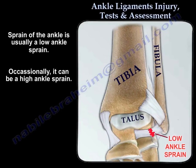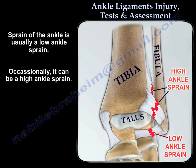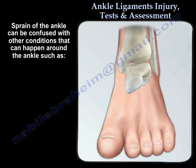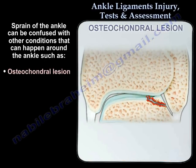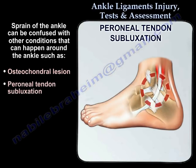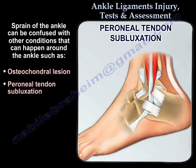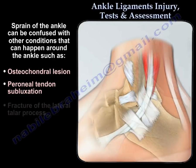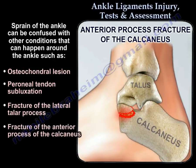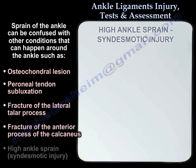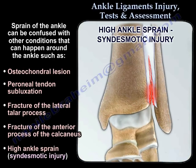A sprain of the ankle is usually a low ankle sprain, but occasionally it can be a high ankle sprain. Sprain of the ankle can be confused with other conditions that can happen around the ankle, such as an osteochondral lesion, peroneal tendon subluxation, fracture of the lateral talar process, fracture of the anterior process of the calcaneus, or a high ankle sprain, which is called syndesmotic injury.